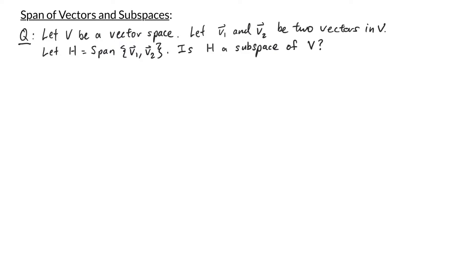In our last video we learned how to check whether a subset of v is a subspace. Remember there are three conditions to check. The first condition is the zero vector in h.